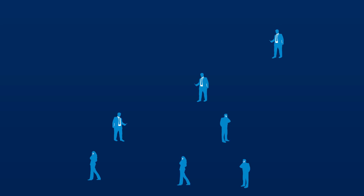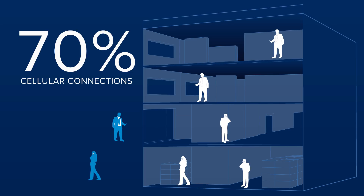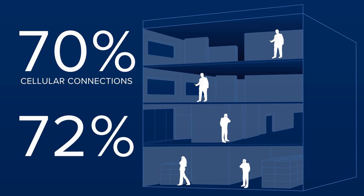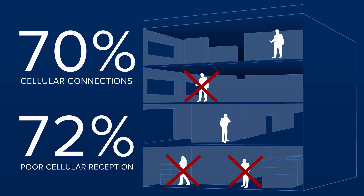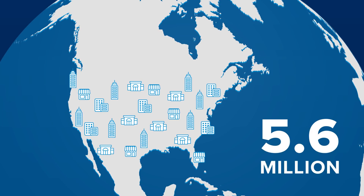Now I want to talk a little bit more about the opportunity that exists for passive DAS in commercial buildings. Pew Research and others state that 70% of all cellular connections take place inside of a building. Add to the fact that 72% of all those users do experience some difficulty in dropped calls or poor cellular reception inside of a building. In North America, for example, there are 5.6 million commercial buildings. Passive DAS is a good solution for 98% of those.